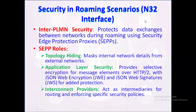Roaming scenarios require secure communication channels between different PLMNs, which is where security edge protection proxies (SEPPs) come into play. SEPPs are deployed in both serving and home PLMNs to enforce security policies, ensuring that messages exchanged between networks maintain integrity and confidentiality. SEPPs also obscure network topologies from external networks to protect sensitive internal information.